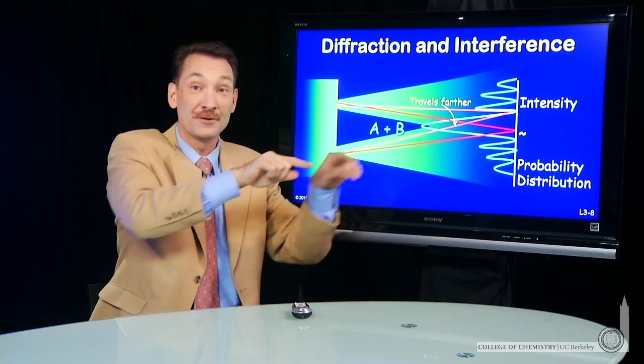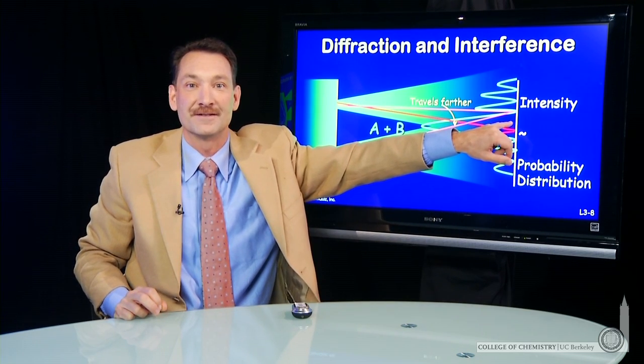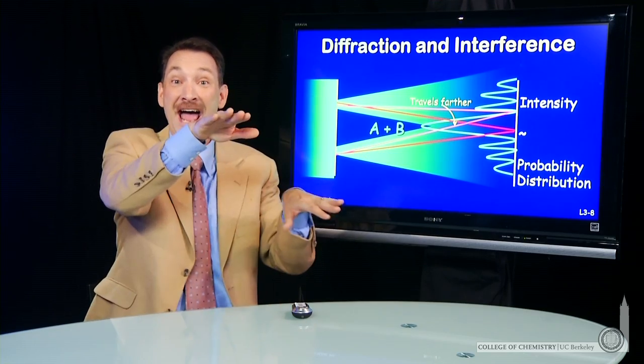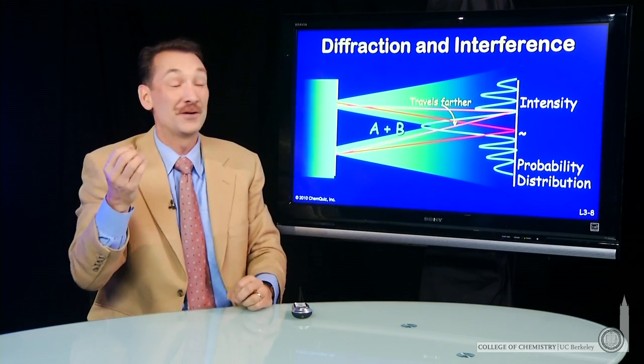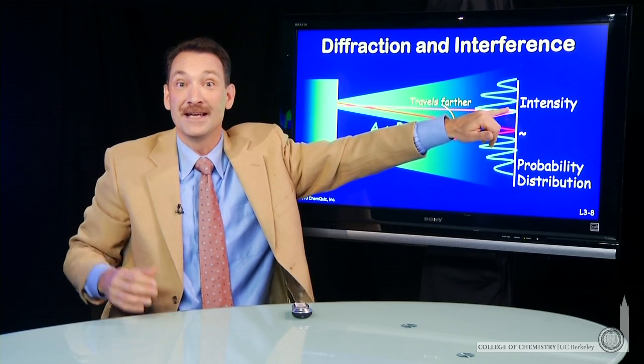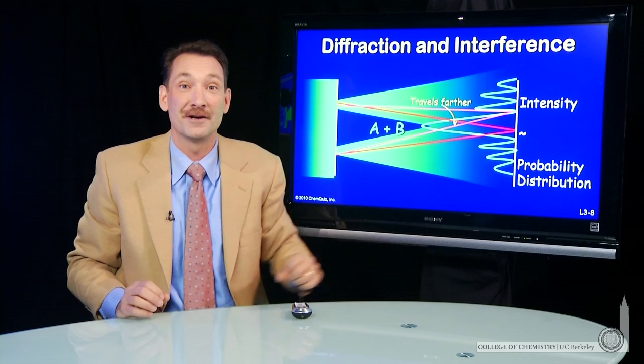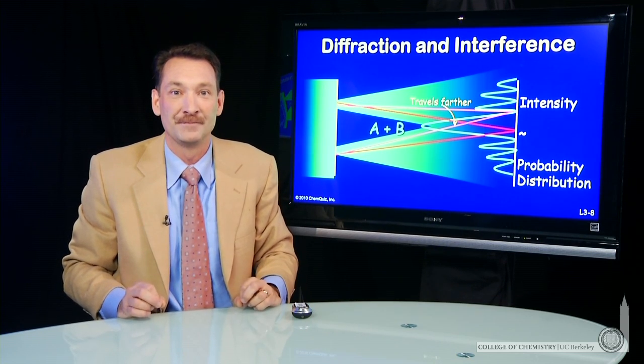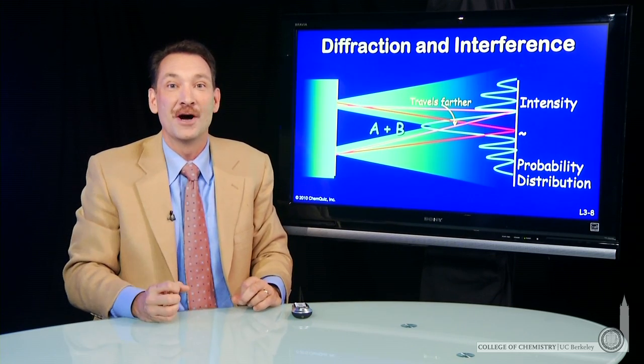And when you add those two intensities together, what you get is destructive interference. So the waves add to give zero intensity. It's actually really cool, and it's something you can see in the experiments that we'll show you later on. We'll shine a laser through a slit, and we'll actually show you this pattern of light and dark spots. This shows us that electromagnetic radiation is actually a wave.